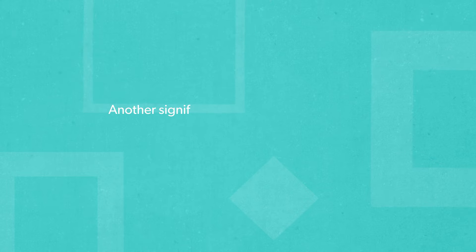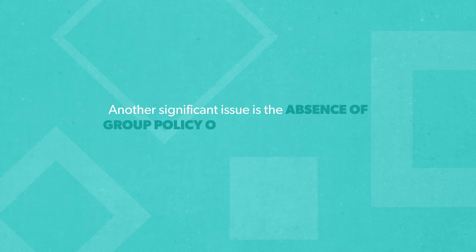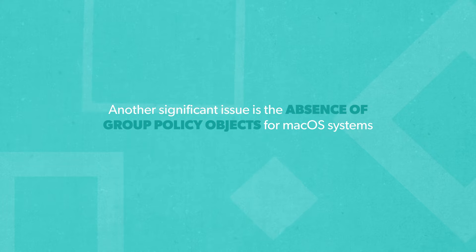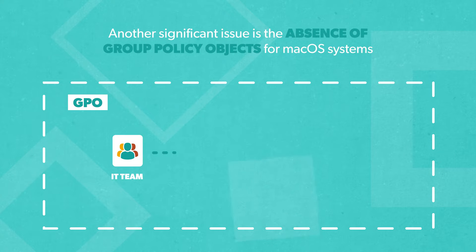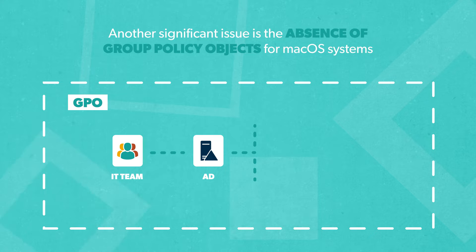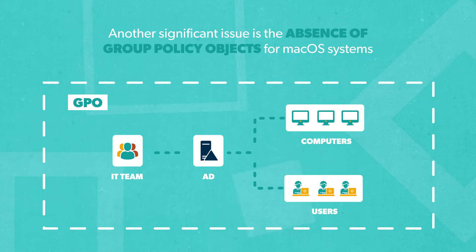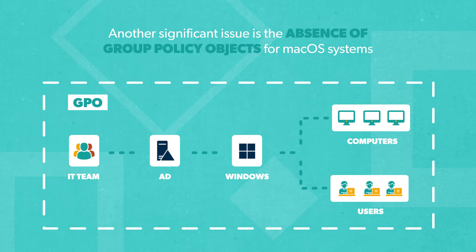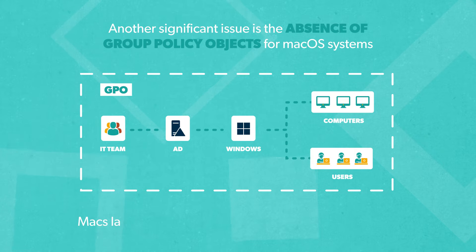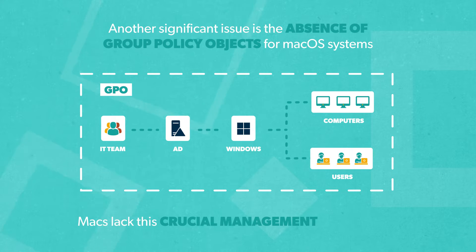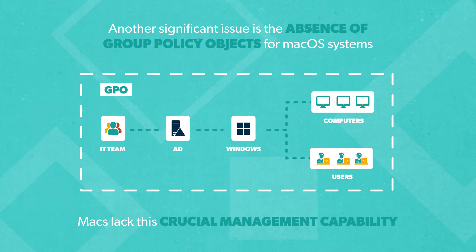Another significant issue is the absence of Group Policy Objects for macOS systems. GPOs, a powerful device management feature of Active Directory, can only be applied to Windows systems directly bound to the AD domain. Macs running on a different operating system are left without this crucial management capability.